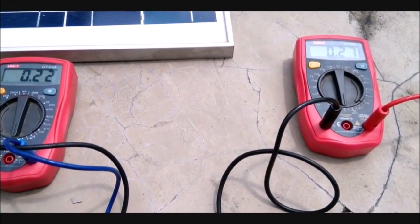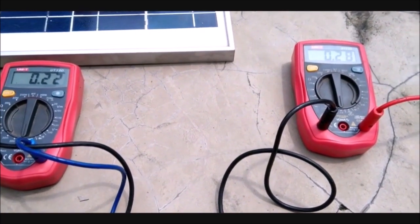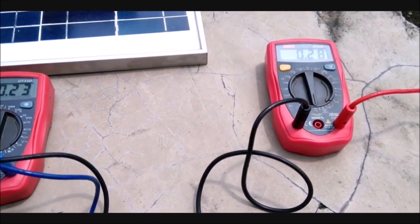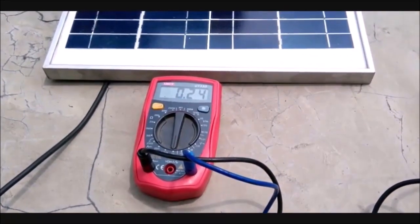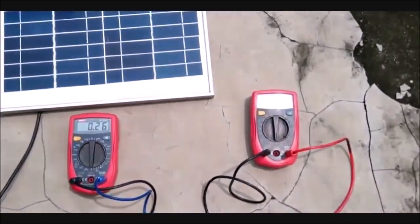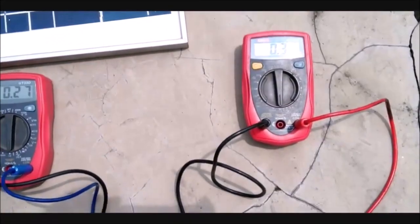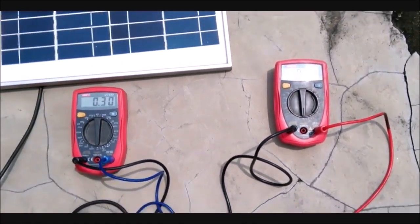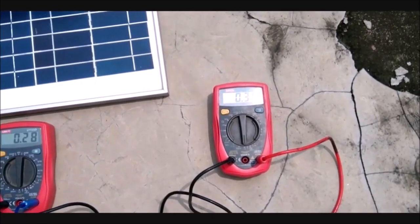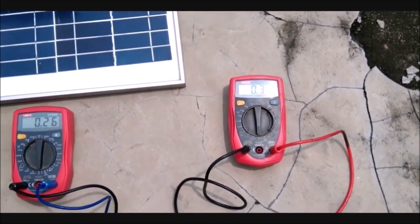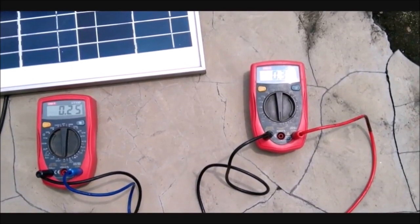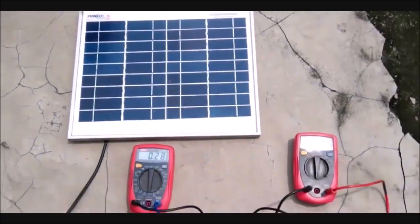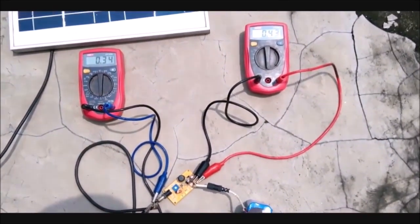So right now the charging current is 0.27 amps that is almost 300 milliamps and on the input side we are drawing about 240 milliamps of current from the panel. So now as the Sun gets more brighter you can see that the charging current increases. Now it's almost 380 milliamps and now it starts to move down as the Sun intensity goes down. So once the MPPT value is set the driver IC will automatically switch the output side to charge the battery in maximum efficiency based on the available power from the solar panel.